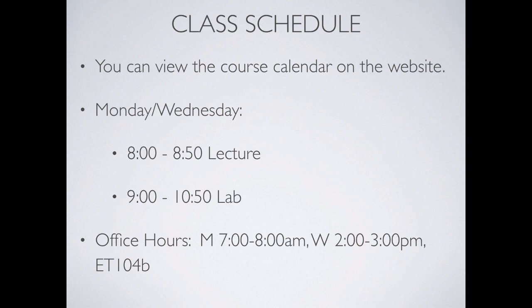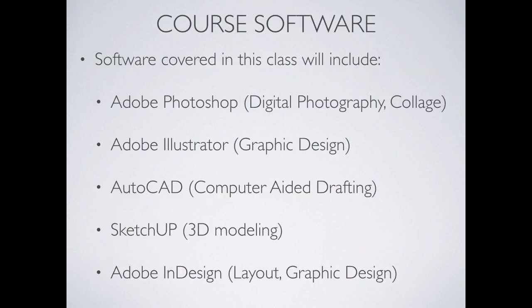My office is ET 104B, right through that hallway there. If I'm not in here, I'll be in there. This is primarily a skills class — we're going to learn software and how to manipulate software so that you are prepared for your other classes. This class is mixed: there are architecture students and industrial design students. The stuff that I'm talking about will apply to both, and if you're in another class, the things we talk about in here will help you there.